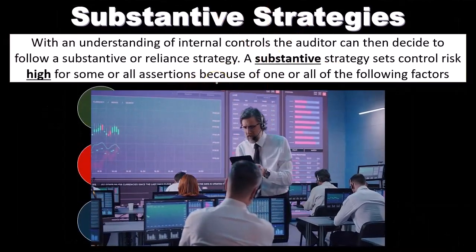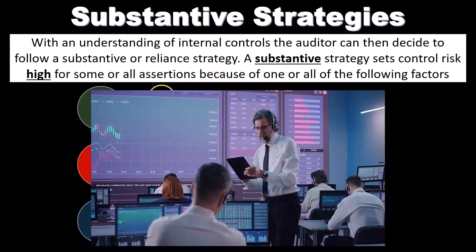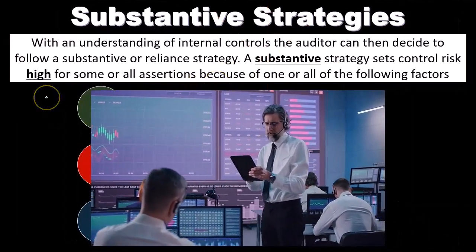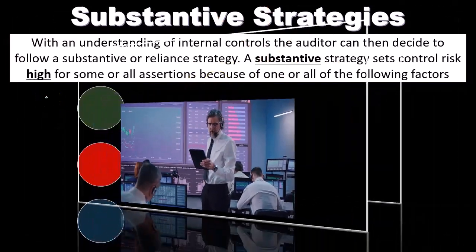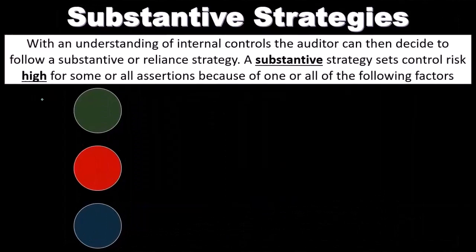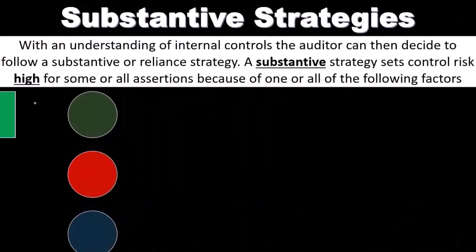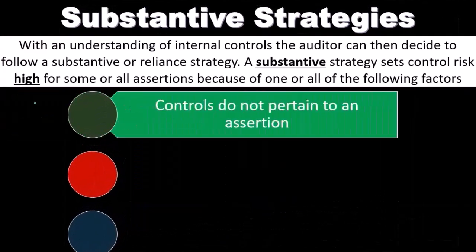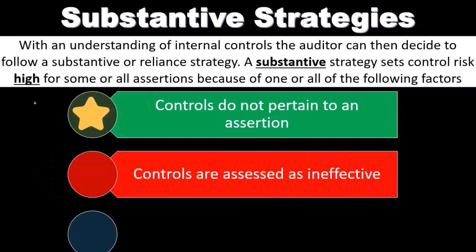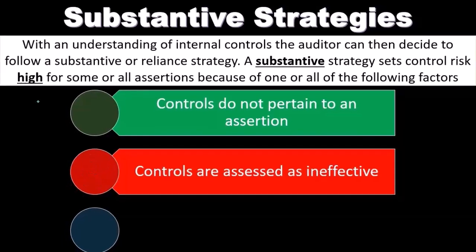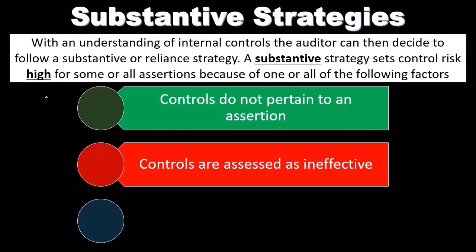A substantive strategy sets control risk high for some or all assertions because of one or all of the following factors, which could include controls do not pertain to an assertion. The control setup might not be something that's tied to that specific assertion that we are testing for.